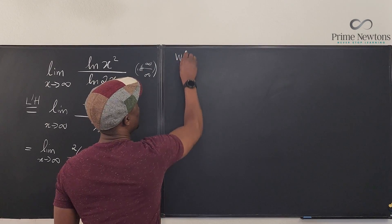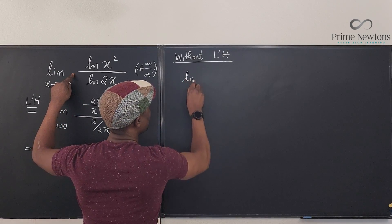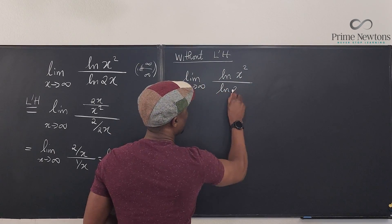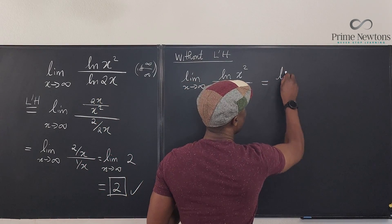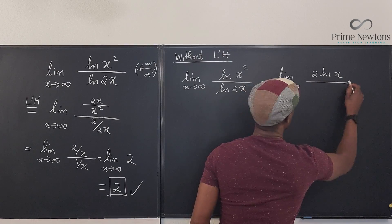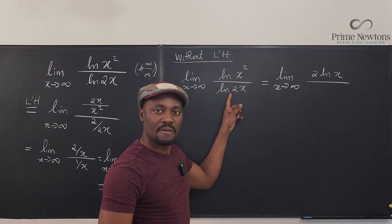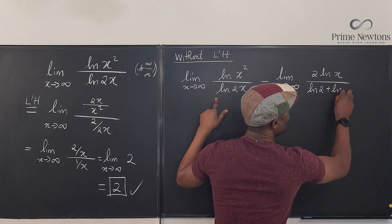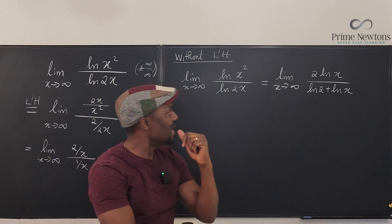Now, what if you're not allowed to use L'Hôpital's rule? Without L'Hôpital's, you have the limit as x goes to infinity of the natural log of x squared divided by the natural log of 2x. We use algebra: natural log of x squared becomes 2 ln(x). Then we split ln(2x) as the natural log of 2 plus the natural log of x — you've seen that in algebra before.